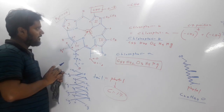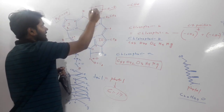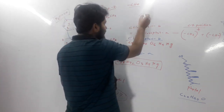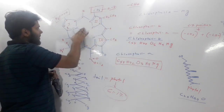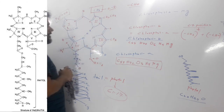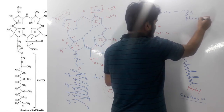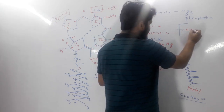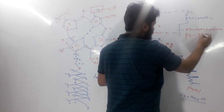Another interesting point: if you remove the magnesium ion from chlorophyll A, the hydrogens fill those positions and the resulting structure is called pheophytin. Pheophytin acts as an electron carrier in photosynthesis.